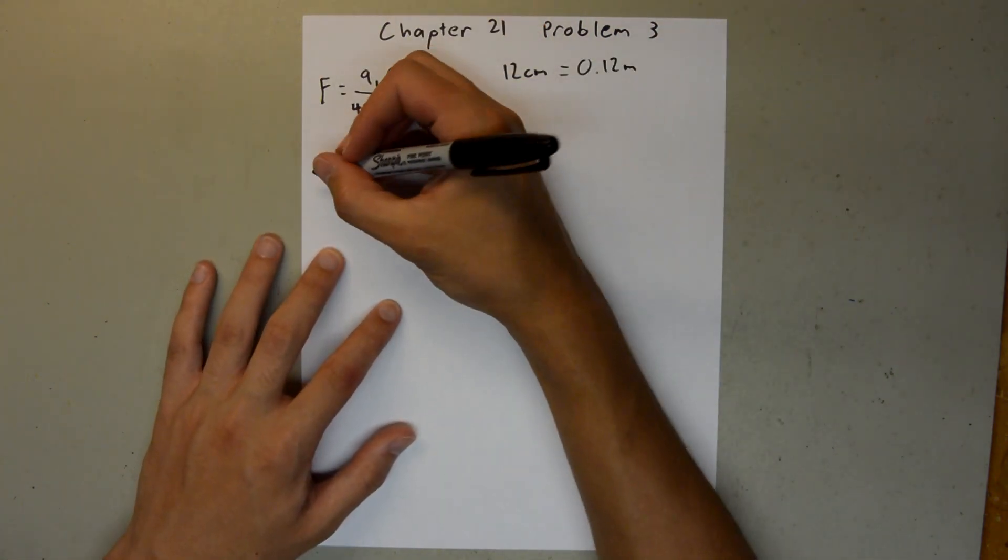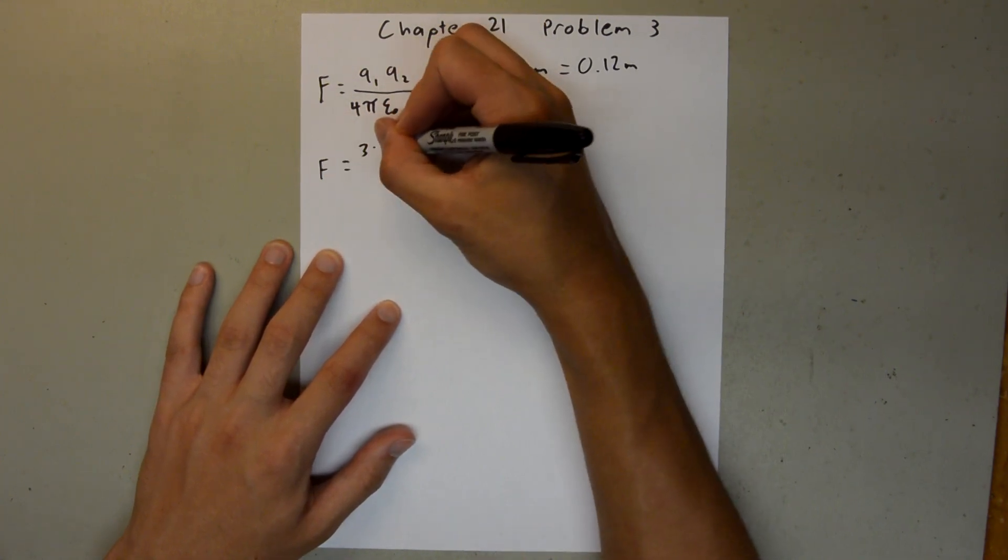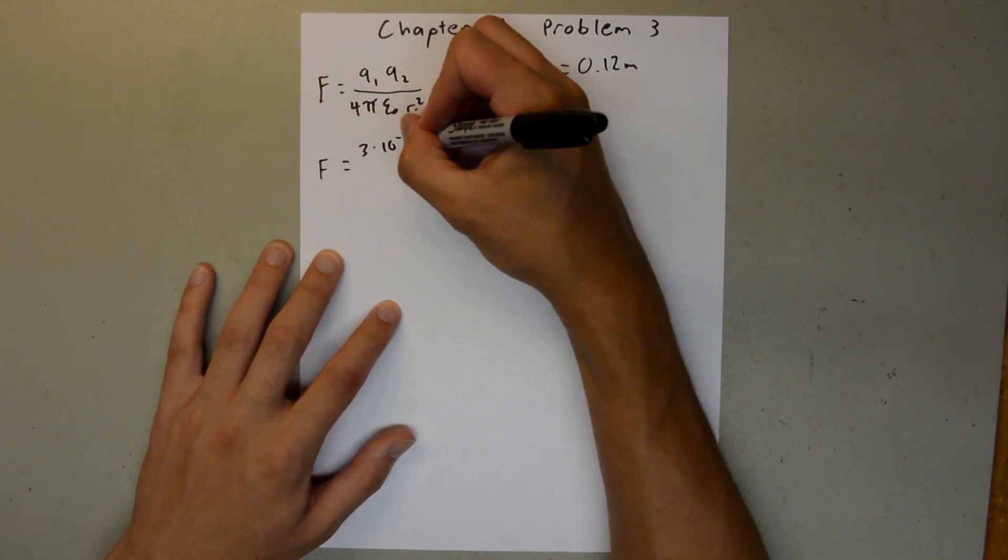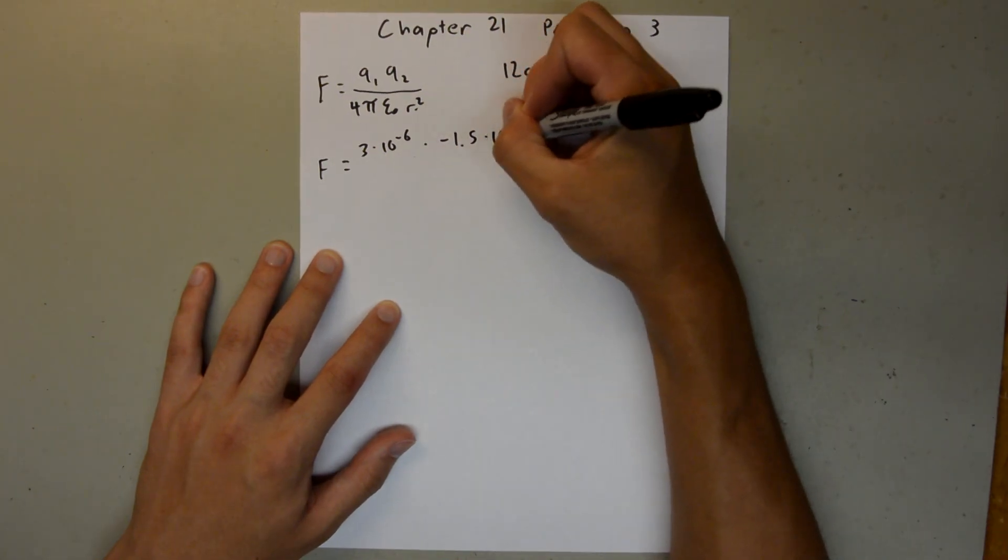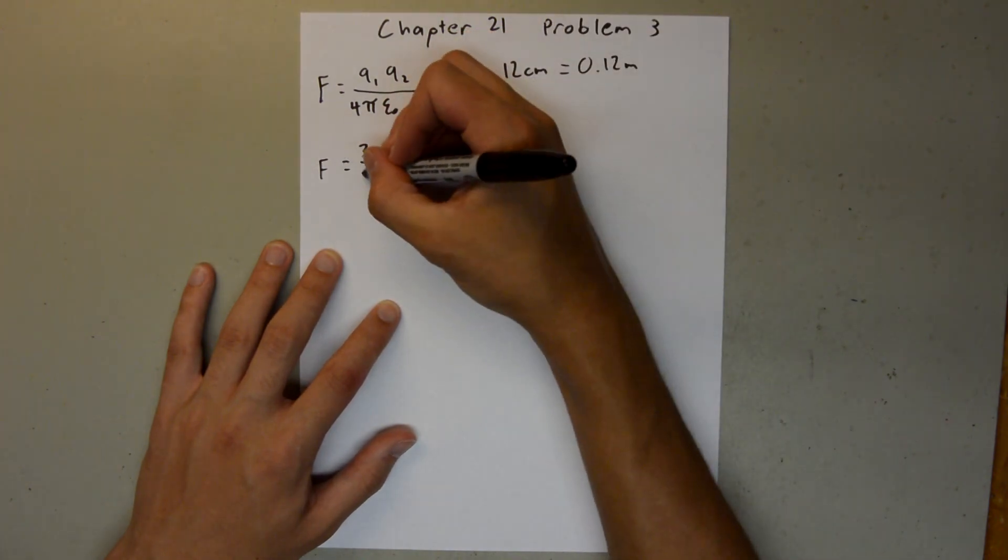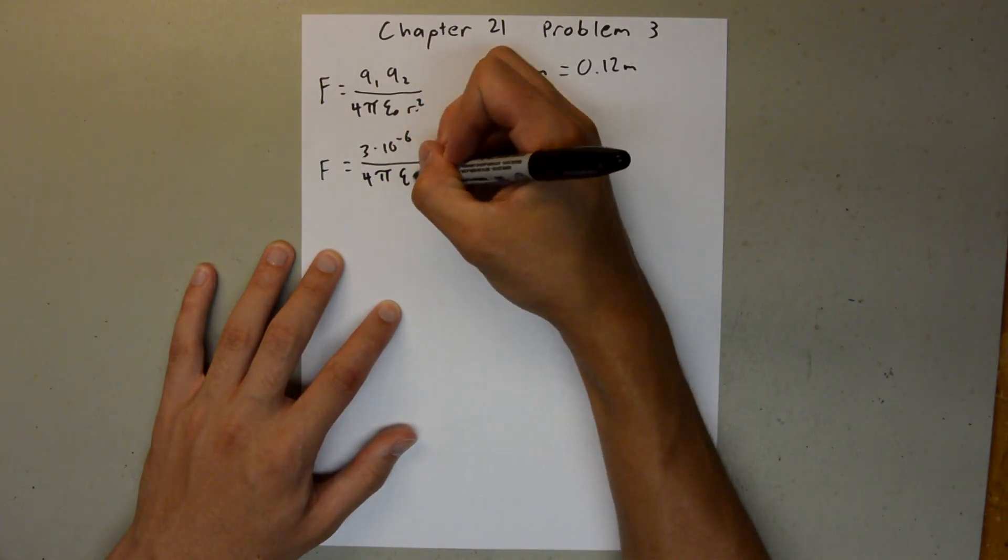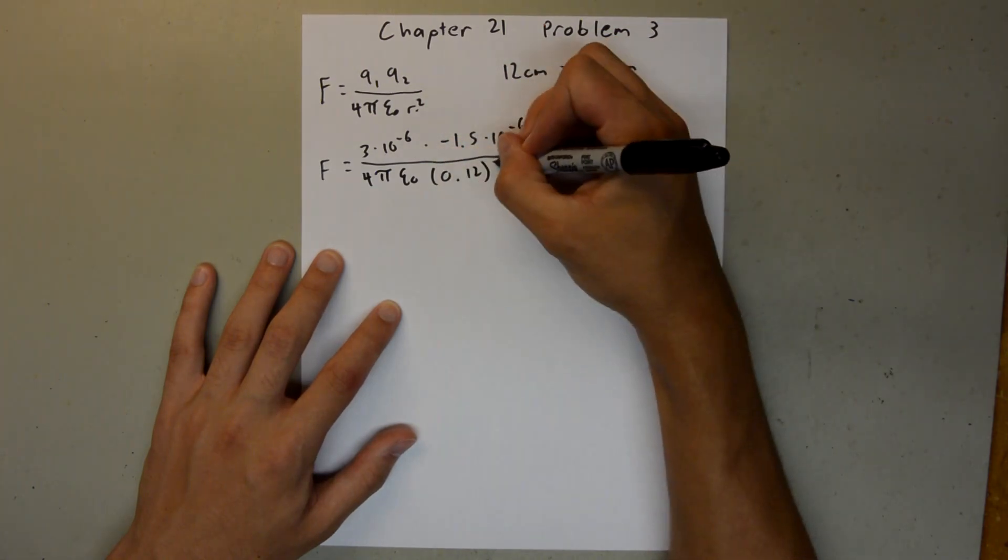We're given all these values in the problem, so we can just plug them in. We have f equals charge 1 is 3 times 10 to the negative 6th, Charge 2 is negative 1.5 times 10 to the negative 6th, and that's over 4 pi epsilon sub 0 times 0.12 squared.